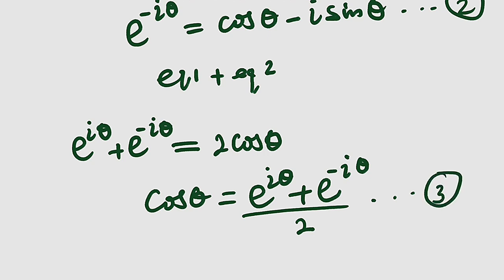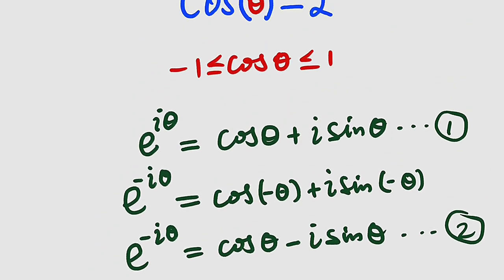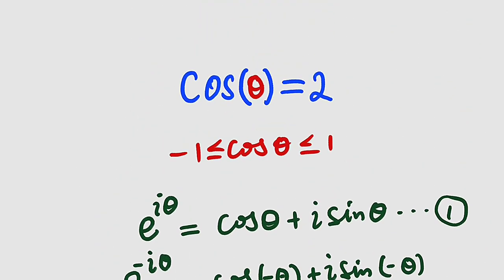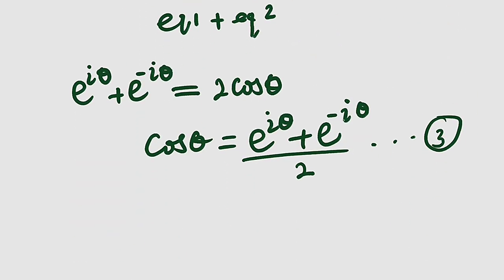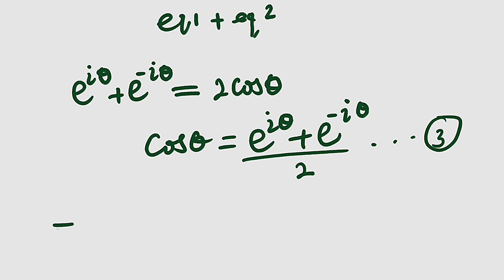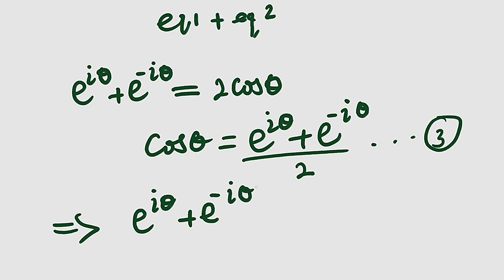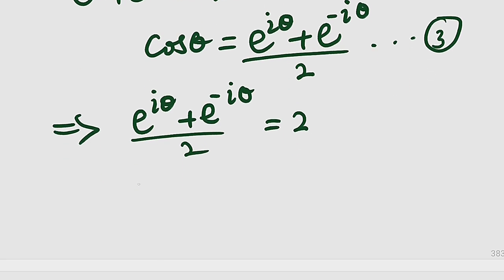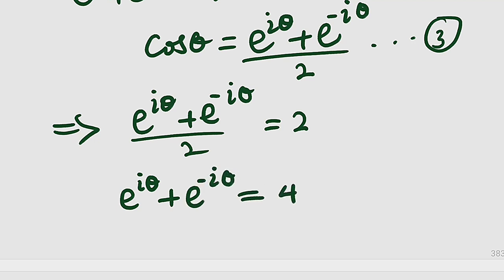Now we relate equation 3 with our original equation. We have cosine theta equal to 2, and from equation 3 cosine theta equals (e to the i theta plus e to the negative i theta) divided by 2. Equating the right-hand sides: (e to the i theta plus e to the negative i theta) divided by 2 equals 2. By cross multiplication, e to the i theta plus e to the negative i theta equals 4.